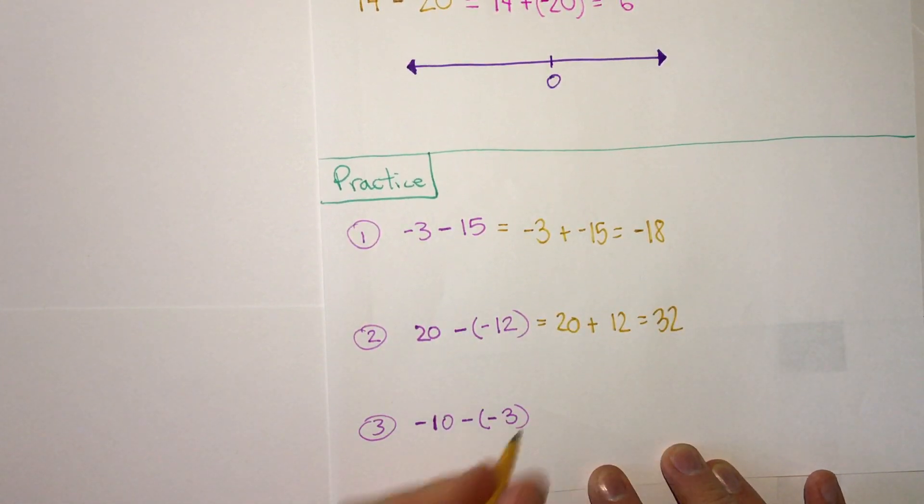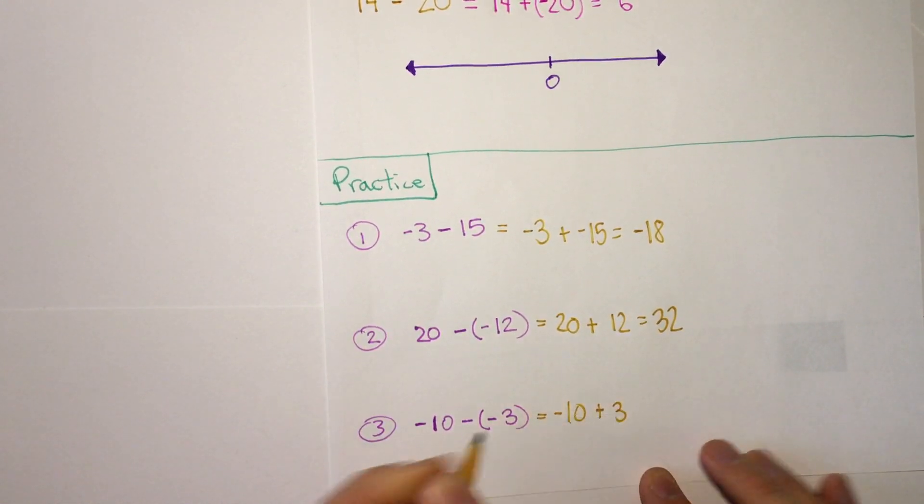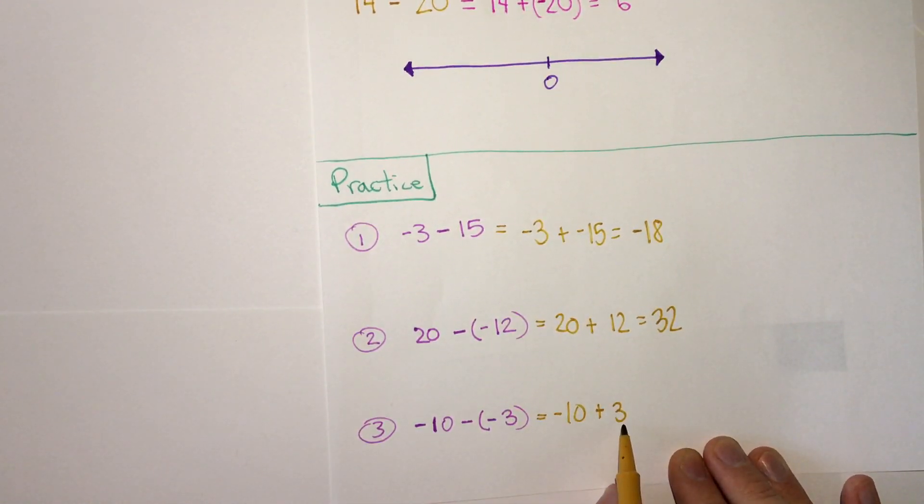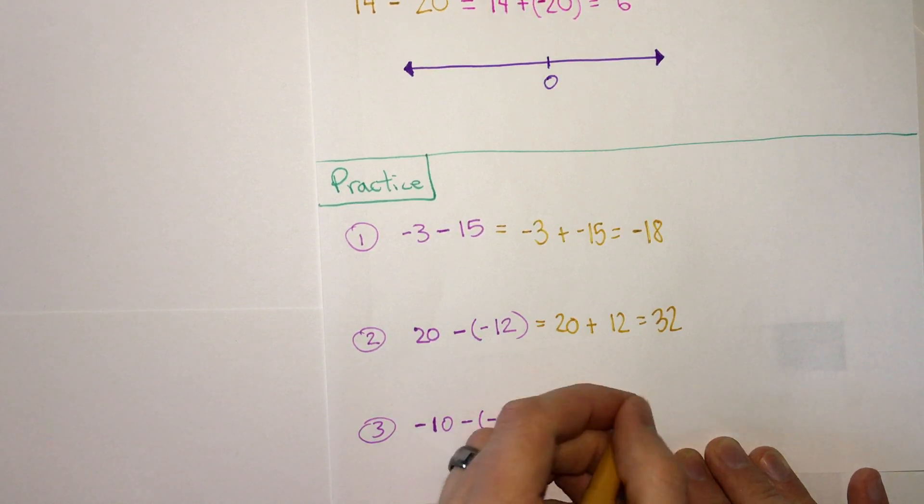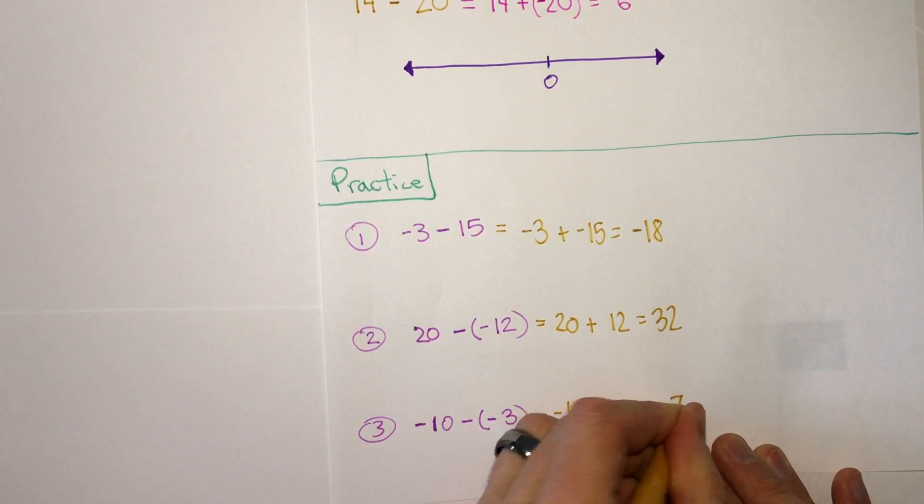And our last one as well. We keep, and then a plus, positive 3. Negative 10 plus 3. Since it's a negative and a positive, we'll subtract. 10 minus 3 is 7. The negative is bigger, so it's negative 7.